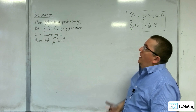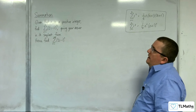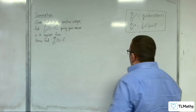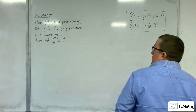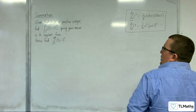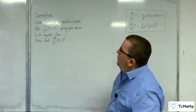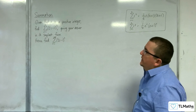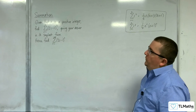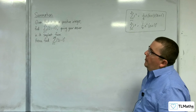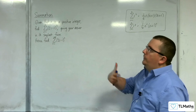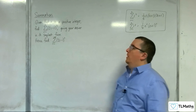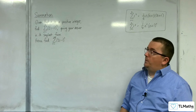In this problem, given that n is a positive integer, we need to find the summation from r equals 1 to n of (2r minus 1) cubed, giving your answer in its simplest form. Hence, find the sum from r equals 1 to 100 of (2r minus 1) cubed.